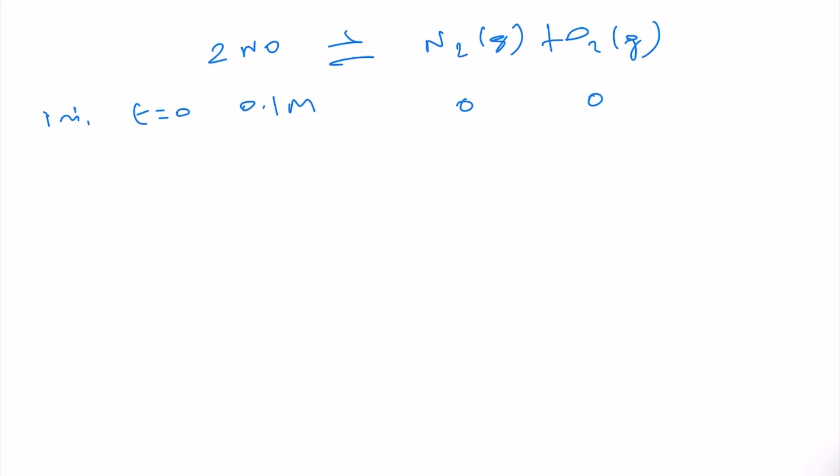Initially, when time t is equal to 0, this is 0.1 molar, the NO is 0.1 molar and then N2 is 0, O2 is also 0.